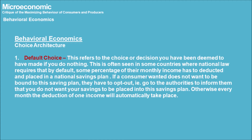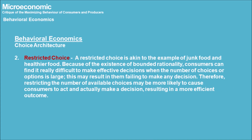Choice Architecture 1: Default Choice. This refers to the choice or decision you have been deemed to have made if you do nothing. This is often seen in countries where national law requires that by default a percentage of monthly income is deducted and placed in a national savings plan. If a consumer does not want to be bound to this saving plan, they have to opt out — informing the authorities — otherwise the monthly deduction will automatically take place.